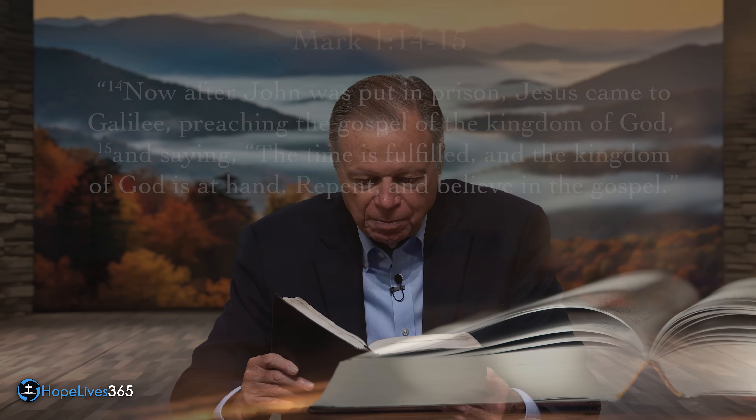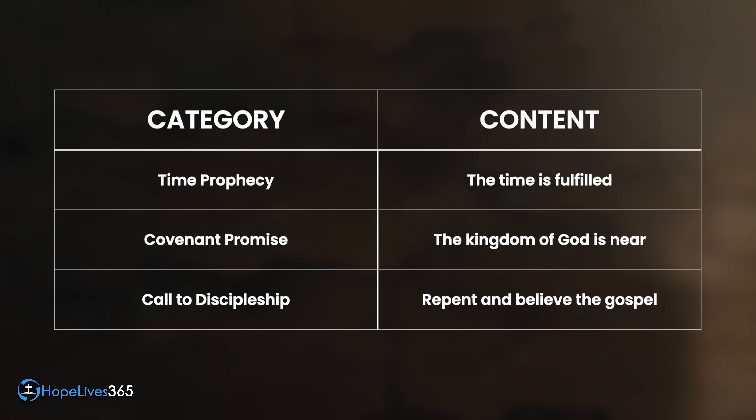One prophetic day equals one literal year, as in Numbers 14:34 and Ezekiel 4:6. So 69 prophetic weeks equals 483 literal years — from 457 B.C. forward brings us to 27 A.D., the coming of the Messiah. The decree went forth in the fall, and Jesus was baptized exactly in the fall of 27 A.D. Christ is baptized, and in Mark 1:14 Jesus says: 'The time is fulfilled. The kingdom of God is at hand. Repent and believe the gospel.' Jesus was crucified on time in 31 A.D., and the gospel went to the Gentiles on time in 34 A.D.